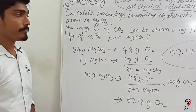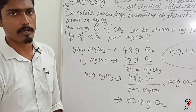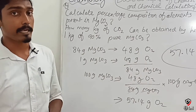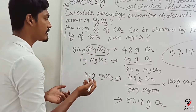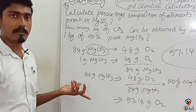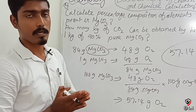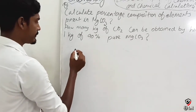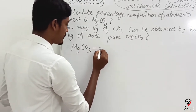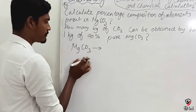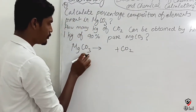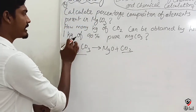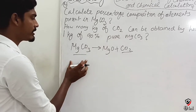So MgCO₃ is already fully analyzed. From these 3 answers we have the composition. Now the last question: if we heat the magnesium carbonate, we need the equation. Magnesium carbonate, when heated, gives magnesium oxide and CO₂ is formed. Let's try to figure out 1 kg of pure MgCO₃.